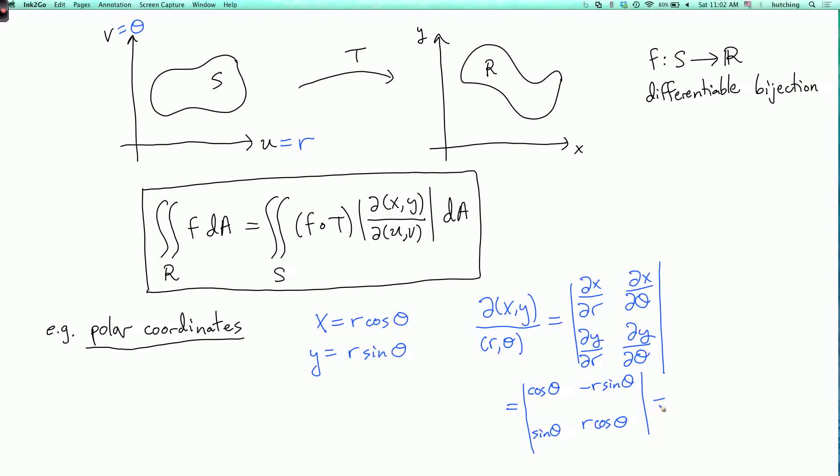The product of these diagonal entries is R cosine squared theta, and we subtract the product of the other two entries, which is minus R sine squared theta. This is R times cosine squared theta plus sine squared theta, so it's just R. That's the magnification factor we got before.